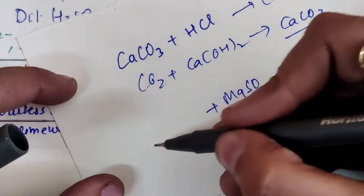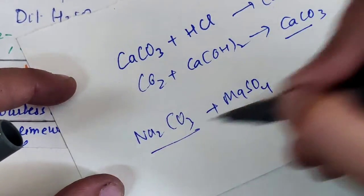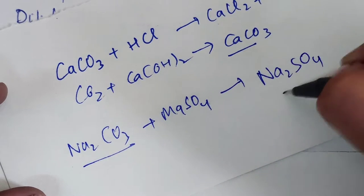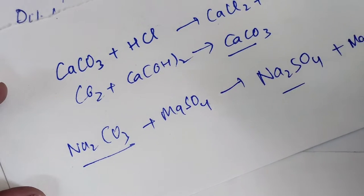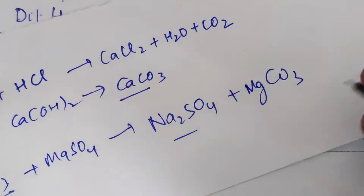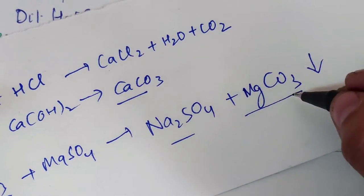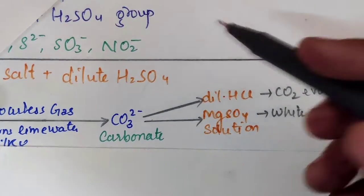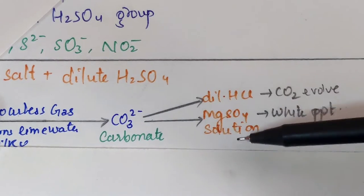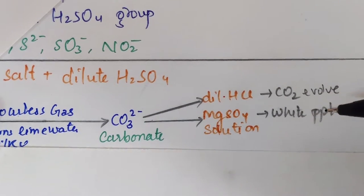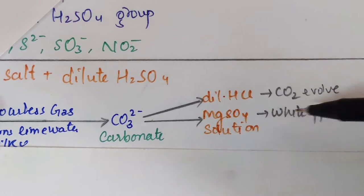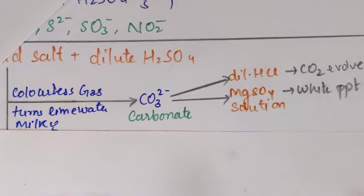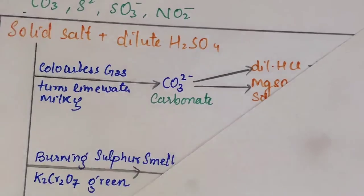The second confirmatory test for carbonate is the MgSO₄ solution test. For example, take sodium carbonate — Na₂CO₃ — and add MgSO₄; it forms Na₂SO₄ and MgCO₃. This MgCO₃ is a white precipitate. So to the salt solution we add MgSO₄ solution and obtain magnesium carbonate as a white precipitate. This completes the first anion analysis with its confirmatory tests.